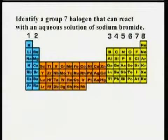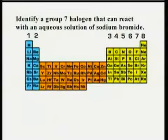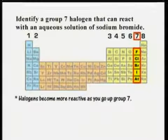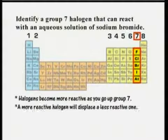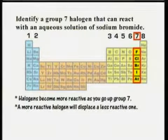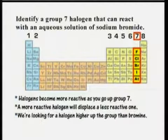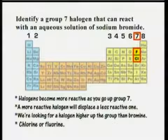Identify a group 7 halogen that will react with an aqueous solution of sodium bromide. The halogens become more reactive as you go up group 7, and a more reactive halogen will displace a less reactive one from a solution of its salt. So we're looking for a halogen that's higher up the group than bromine — that's either chlorine or fluorine.